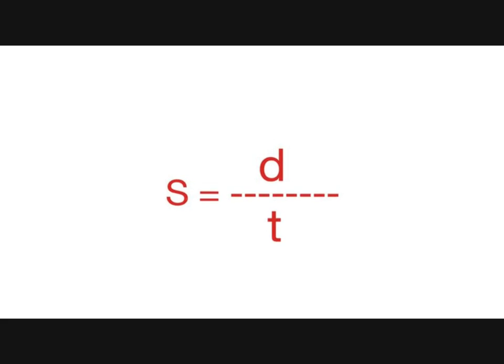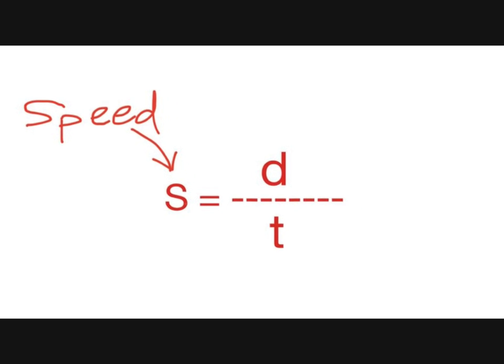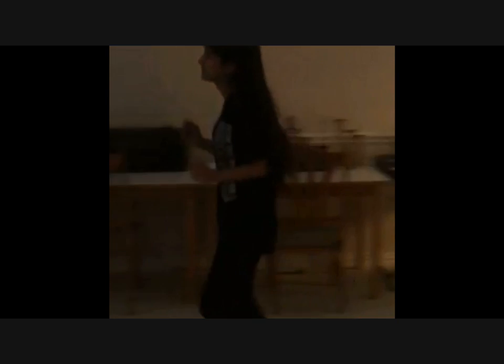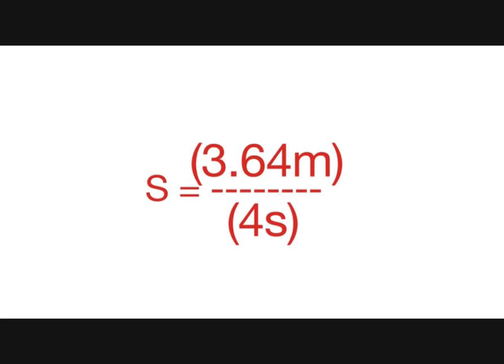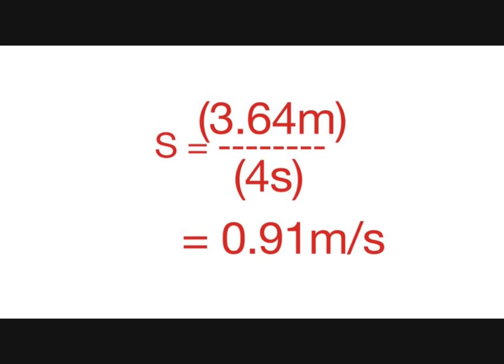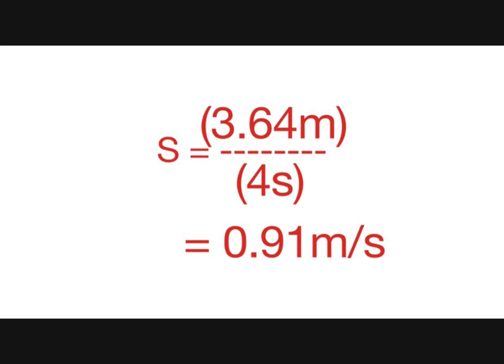Let's say you want to find Amina's speed in this video. To find that, we use the equation S equals D over T. S represents speed, D represents distance, and T represents time. Since we can see that Amina travels 3.64 meters and it takes her 4 seconds to travel, we have enough information to find her speed. Now plug in the information, divide, and you find Amina's speed to be 0.91 meters per second.